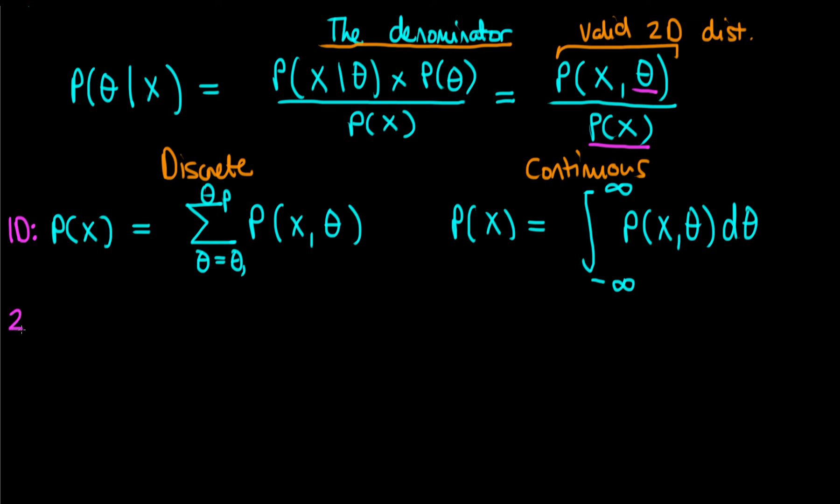Let's now consider the two-dimensional case. Now our joint distribution has two parameters in it, which means we need to do for the discrete case two sums. So we do the sum from phi equals phi 1 to phi q and theta equals theta 1 to theta p of P of x theta and phi. So phi is another parameter that I've added to our joint distribution.